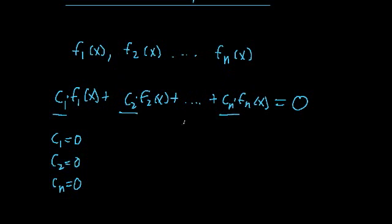The other important point is that the equation has to hold for all values of x. We can't just say that at one particular value of x, such as x equals 3, the function equals 0 and call it linearly dependent or independent. It has to hold for all values of x. This may seem confusing, but it should help once we do some examples.